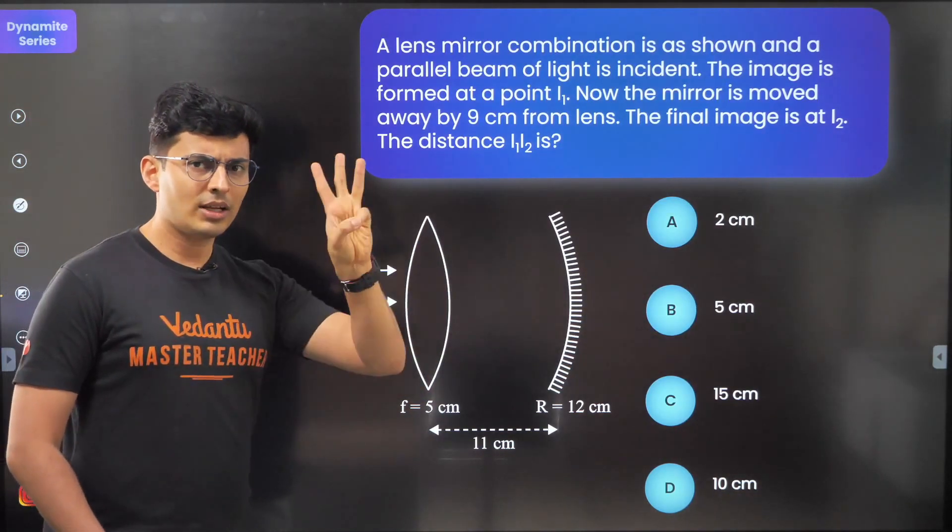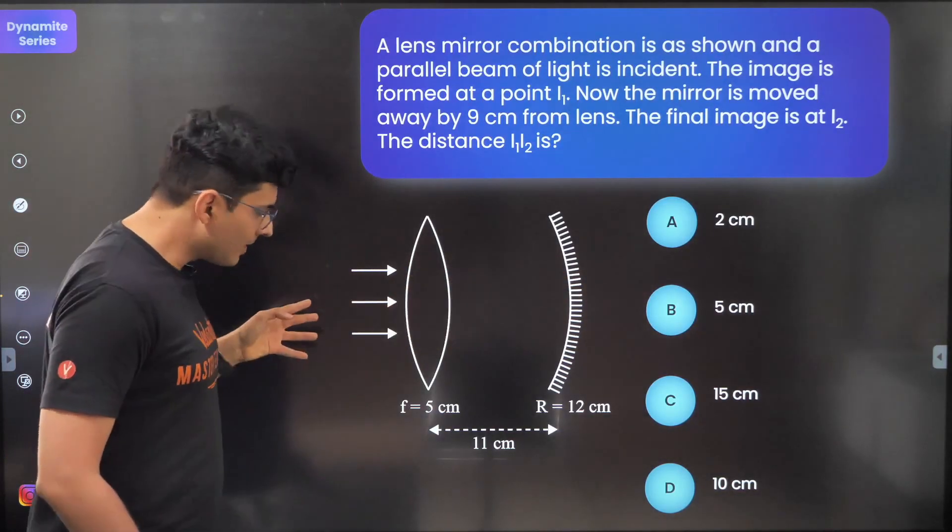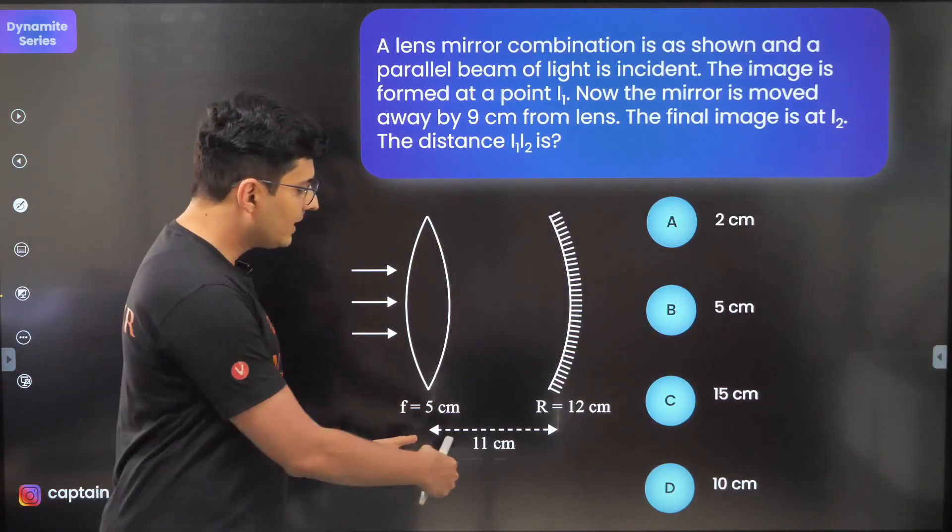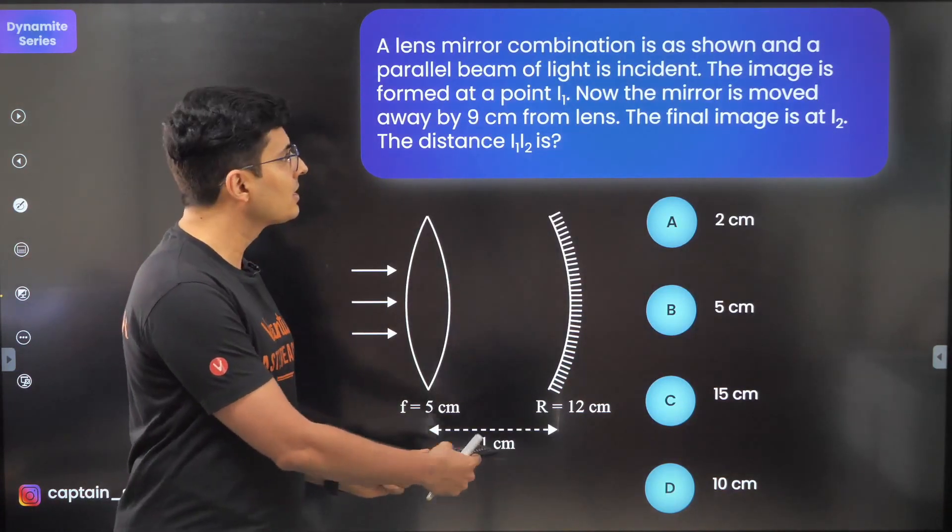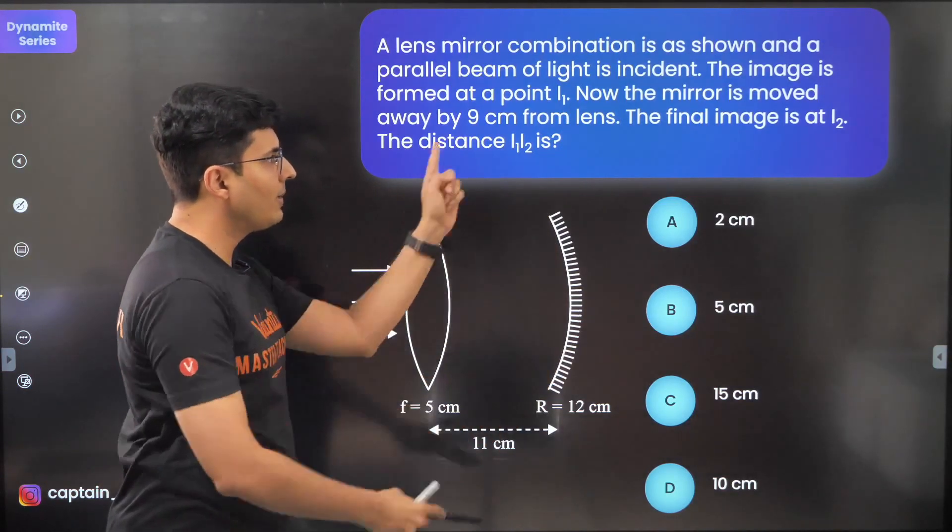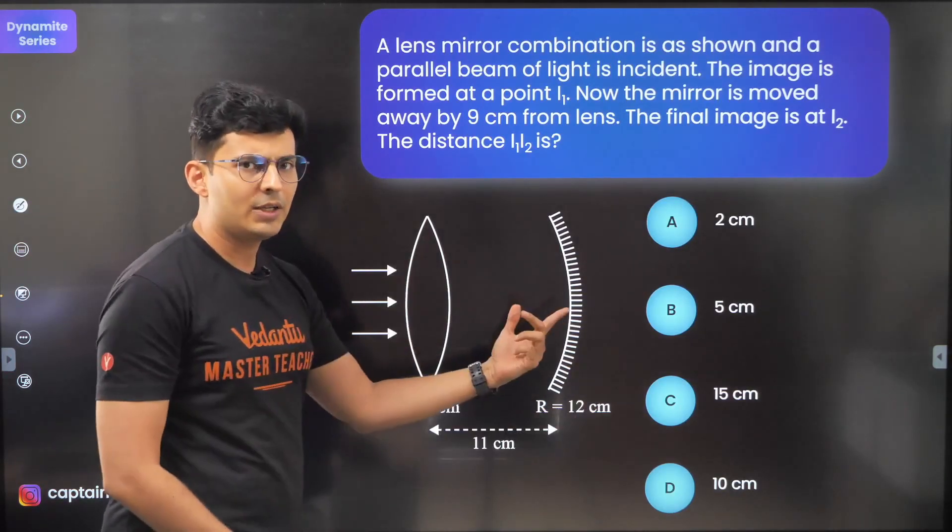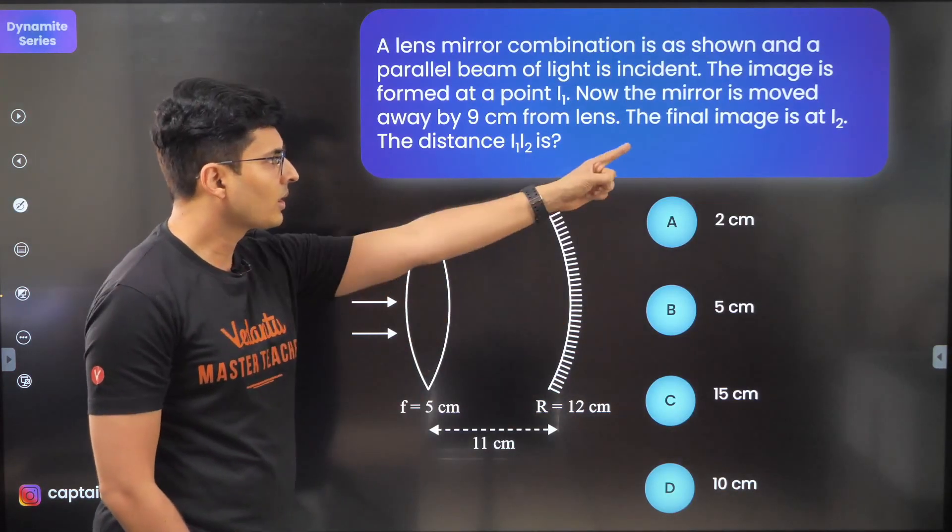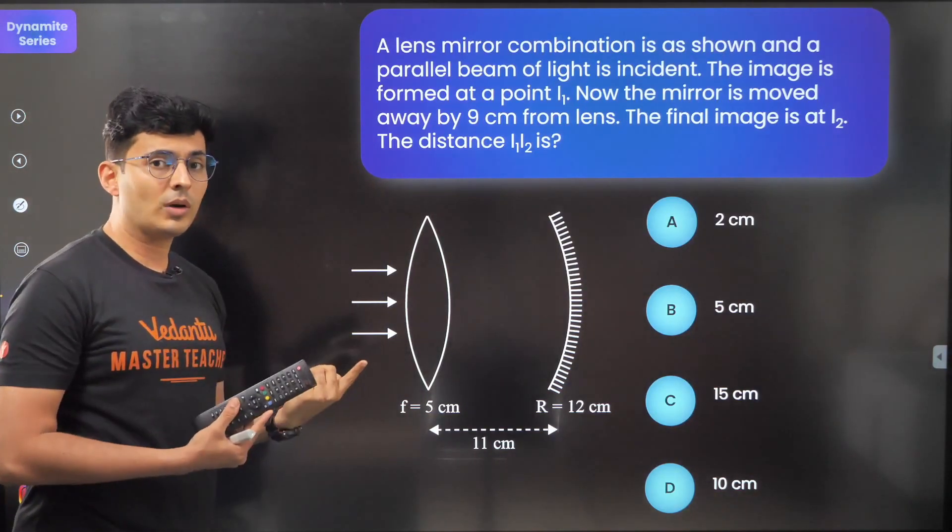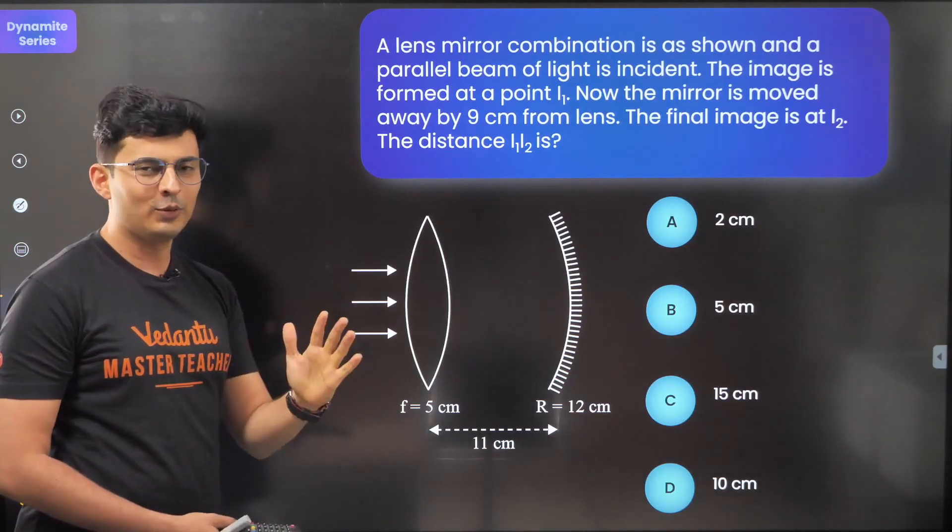There are three events: refraction, reflection, and refraction till the final image I1 is formed. Their initial separation is 11 centimeters. Now the mirror is moved away by 9 centimeters from the lens, so this distance increases to 20 centimeters. The final image now is at I2. What's the distance between I1 and I2? Beautiful question.